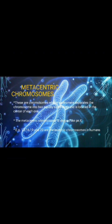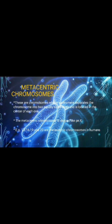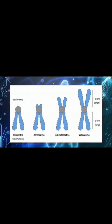Next, metacentric chromosomes. These are chromosomes whose centromere separates the chromosome into two equally sized arms, located at the center. The metacentric chromosome is shaped like an X. Examples in humans are the 13th, 16th, 19th, and 20th chromosomes. These are the types of chromosomes according to their structures.